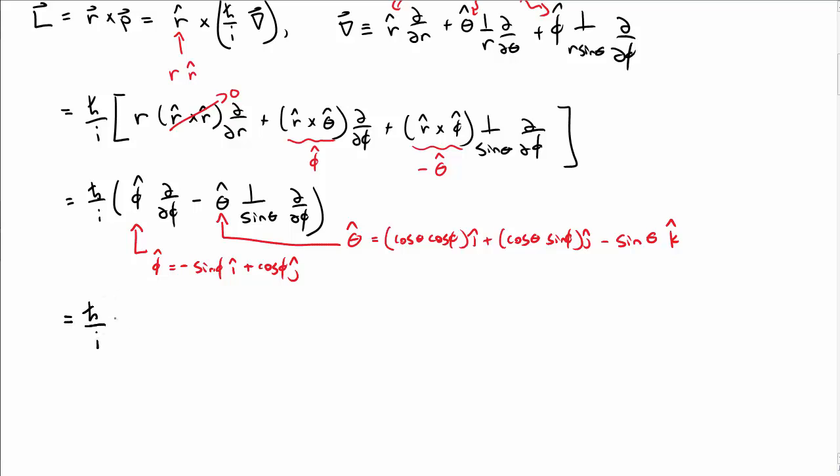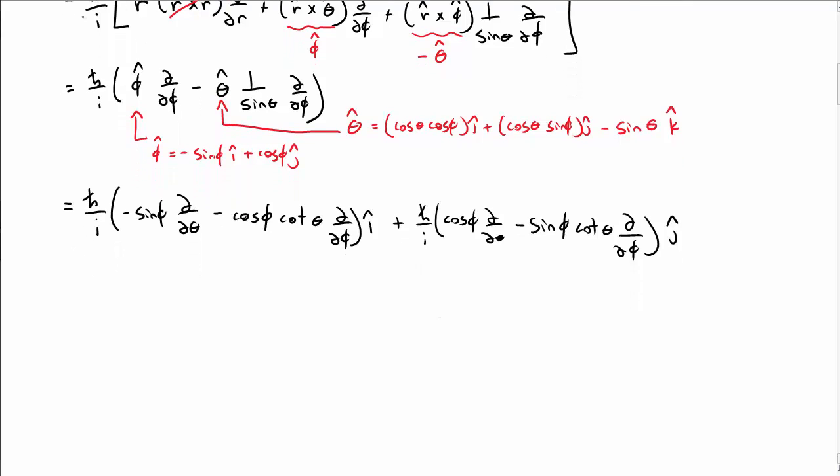Okay, so then when I insert those in, then for my angular momentum vector, or rather angular momentum operator at this point, I get in the x direction, this term, in the y direction, I get another combination of derivatives, looks very similar, except instead of sine phi, I have cosine phi, instead of cosine phi, I have sine phi, and there's a j hat, again in the, that means in the y direction, and in the z direction, I have h bar over i, d by d phi, in the z direction, with k hat.